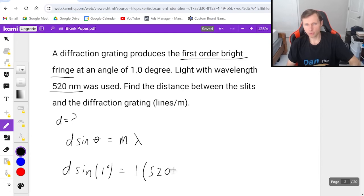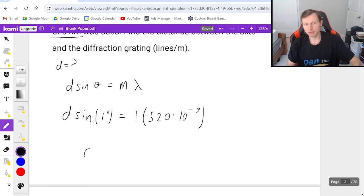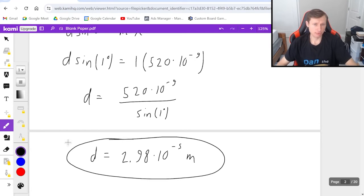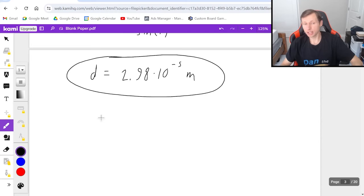But I do have to be careful because nanometers is 10 to the minus 9th. And so then all I have to do is divide both sides by the sine of 1 degree. And that will get me a distance of 2.98 times 10 to the minus 5th meters. So there's my distance between the slits. Very small distance. Very difficult to see with the naked eye.